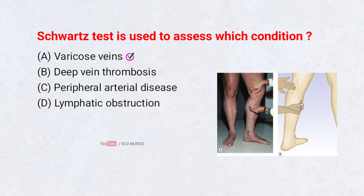Varicose veins. Schwartz's test is used to assess varicose veins. It checks the continuity of superficial veins by feeling a transmitted impulse when the vein is tapped, indicating venous valve incompetence.